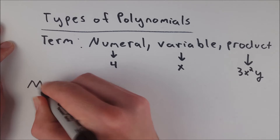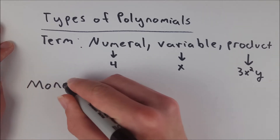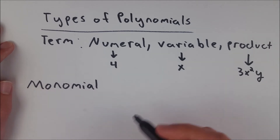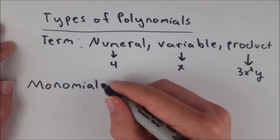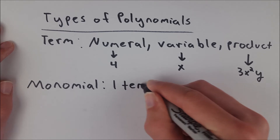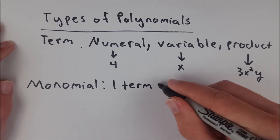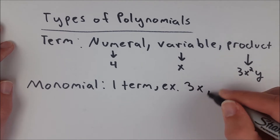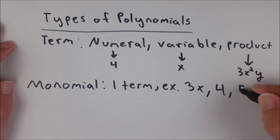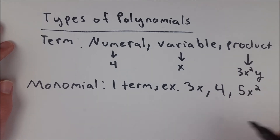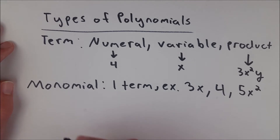The first one we'll look at is a monomial, which if you're familiar with that prefix, or the fact that we're going over this first, of course, this is the type of polynomial that has exactly one term. An example would be 3x, or 4, or 5x². These are all polynomials with one term, which makes them monomials, to give them a nice more specific name.